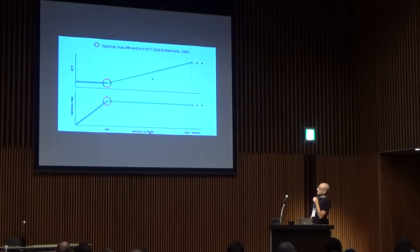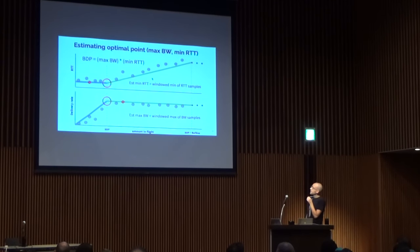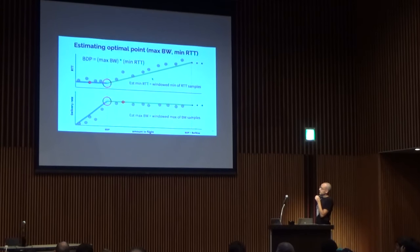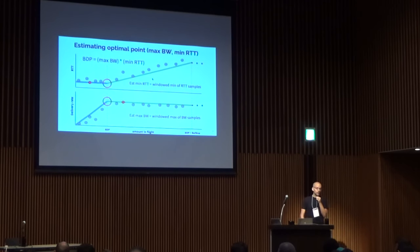The first thing to notice is that the optimal operating point is at the point where the amount of data in flight equals something called the BDP, or bandwidth-delay product — literally the bottleneck bandwidth times the round-trip propagation delay of the path. So we want to talk about how we can estimate where that optimal point is. We basically need to figure out the bottleneck bandwidth and the round-trip propagation delay.